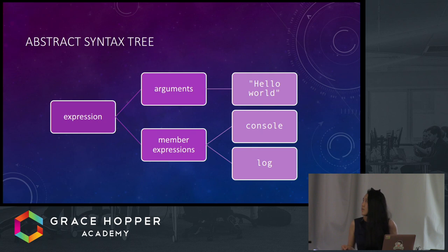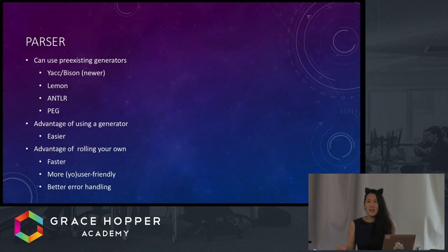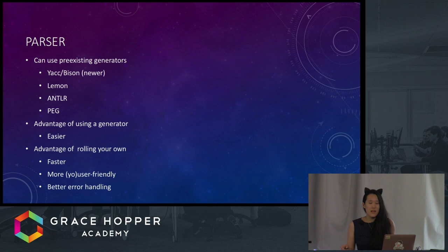This is an example of what an abstract syntax tree might look like for our Hello World program. There are pre-existing tools to generate parsers too. The advantage of using a generator is that it's a lot less work to make a parser, and if you don't know what you're doing, your parser will run a lot faster. But on the other hand, if you know what you're doing, your parser can be a lot faster and more specific to your language.